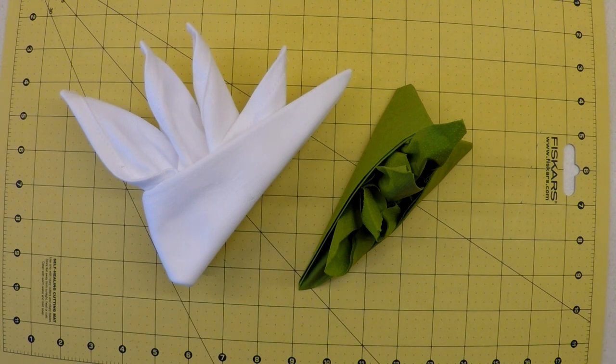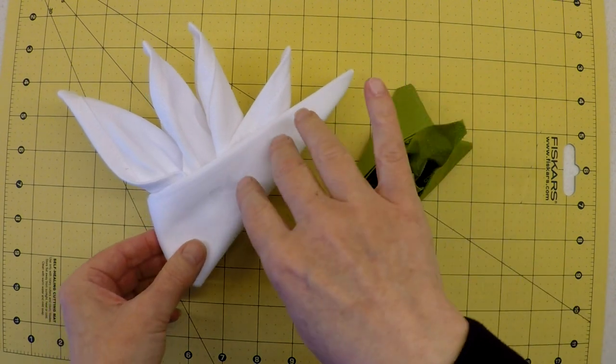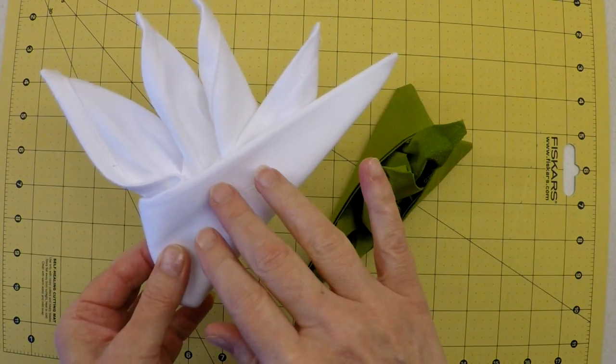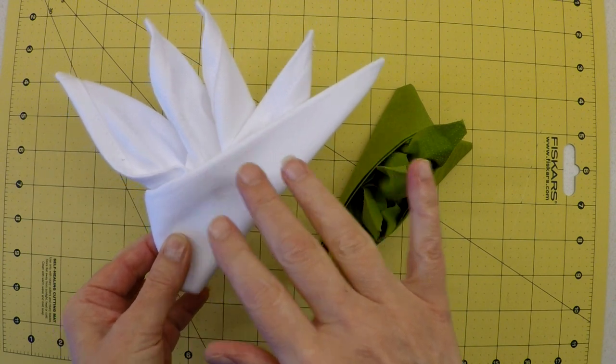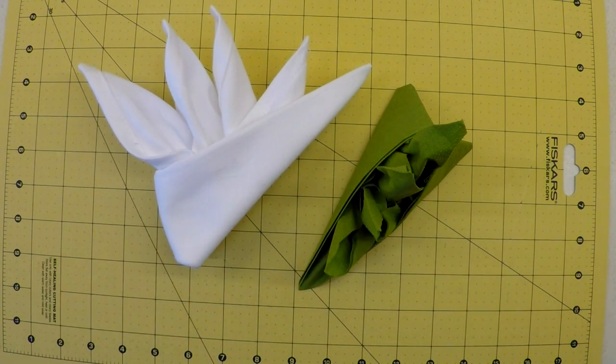This napkin fold does have a few names that I'm aware of. It's been called the bird of paradise, the roaring rooster, and also the cock's comb because, as you can probably see here, it does resemble the comb that's located on top of a cockerel's head.